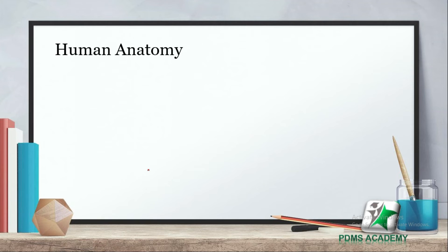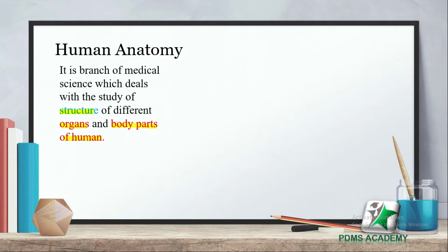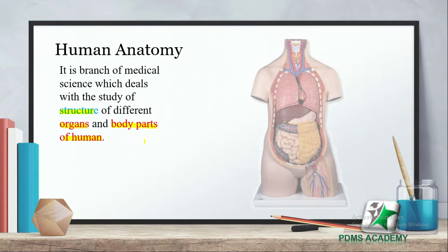Now let's look at human anatomy. What is human anatomy? It is a branch of medical science which deals with the study of structures of different organs and body parts of humans.